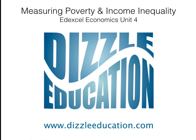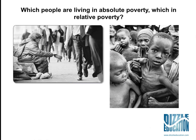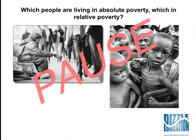Looking at poverty first, have a look at these two images and think about what the words 'absolute' and 'relative' would mean. Think about which of these people is in the position of absolute poverty, and which are in the position of relative poverty. Pause the video now, have a think about it, and work out your answer before you move on.